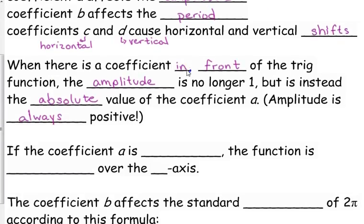So that's the next blanks here - if the coefficient a is negative, then the function is flipped over the x-axis.